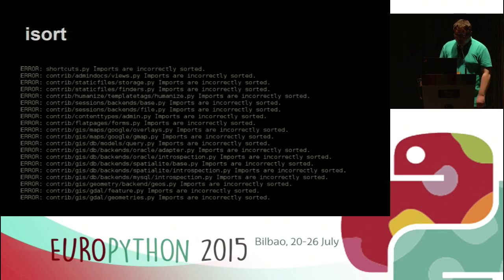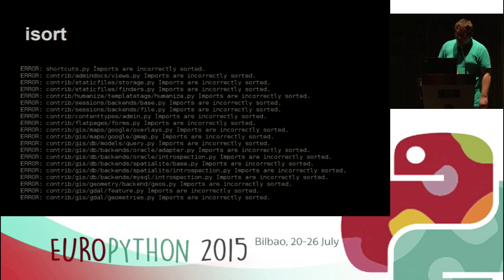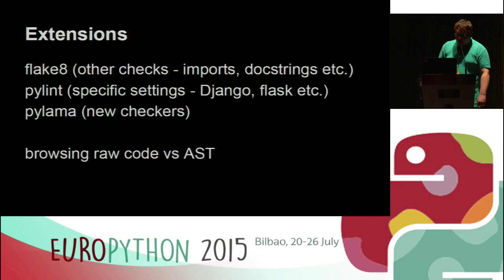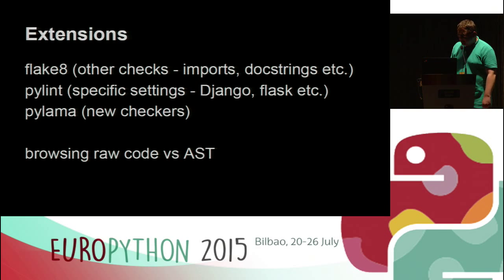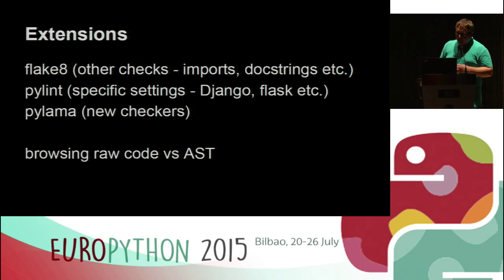The last of the additional tools is iSort. iSort in its default mode sorts the imports in all the files it can find. It can also check if the imports are well sorted. That's not very meaningful on its own, but if you want more meaningful results you can install a plugin for Flake8 which makes some real hints on how to sort imports.